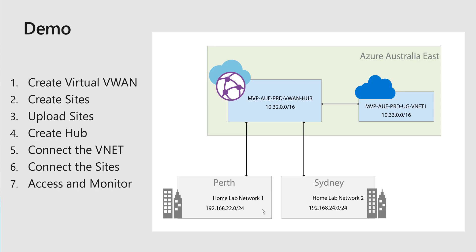I have created a virtual V-WAN and a hub network within it. I have created two branch networks - one in Perth and one in Sydney - with locally assigned IP addresses. The Sydney network has a different IP range, and I have connected both to the Azure V-WAN. I also have an Azure Virtual Network in Australia East connected to the hub. The V-WAN hub is a Microsoft-managed hub environment; it propagates all IP ranges from connected networks and acts as a broker network for all other networks.